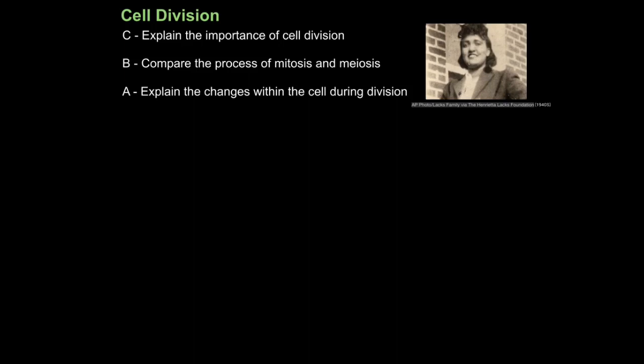Even today her cells continue to divide and we still use them for research. You may have heard of chemotherapy. This is one weapon we have against cancer. Chemotherapy involves taking chemicals into the body, and these chemicals stop the process of cell division. Now, even normal body cells divide. But because cancerous cells divide at an accelerated rate, the drugs usually prioritize these cells first.